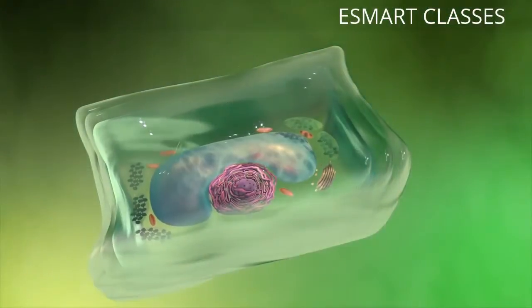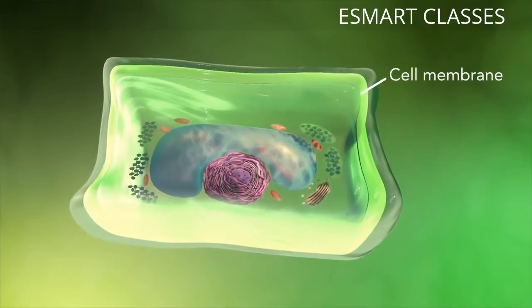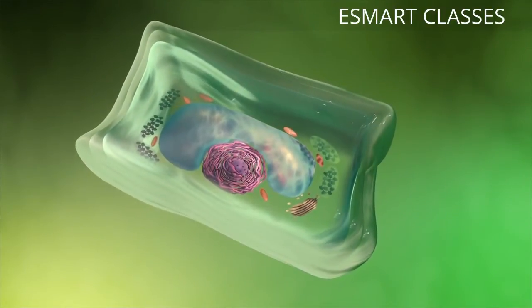Plant cells also have a cell wall outside of their cell membranes that shape, support, and protect the plant cell. Animal cells never have a cell wall.